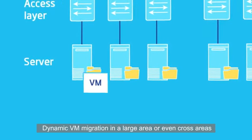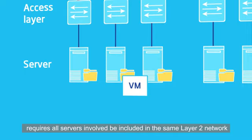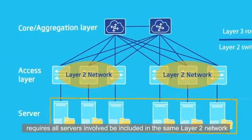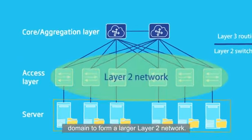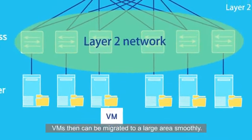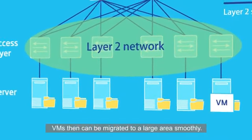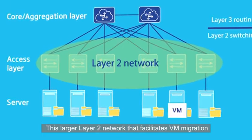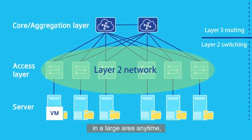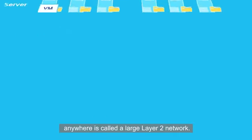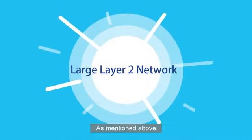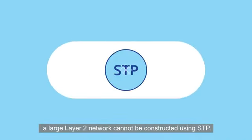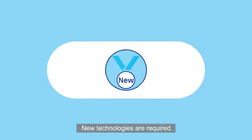Dynamic VM migration in a large area or even cross areas requires all servers involved to be included in the same layer 2 network domain to form a large layer 2 network. VMs can then be migrated to a large area smoothly. This large layer 2 network that facilitates VM migration in a large area anytime, anywhere, is called a large layer 2 network. As mentioned above, a large layer 2 network cannot be constructed using STP. New technologies are required.